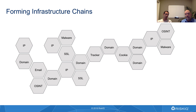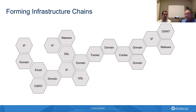Starting at the top left, we have an IP address connected through a domain because the domain is resolving to that IP. Maybe that domain was registered with a particular email, and that email was then connected to another domain also registered with the same email. Maybe that domain is inside of an open source intelligence report.